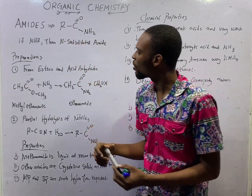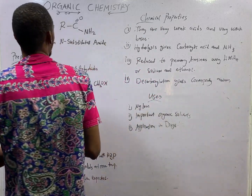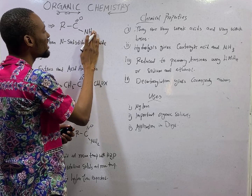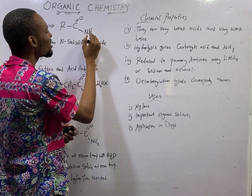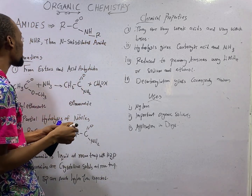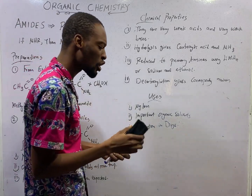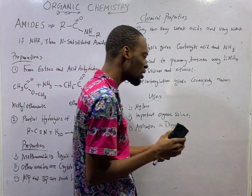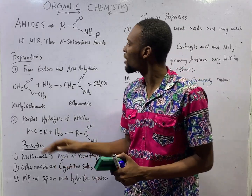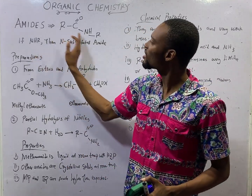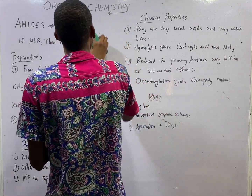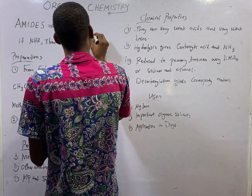When you have NH with another alkyl group instead of H2, we call that N-substituted amides. If you have NH-R (an alkyl group) instead of NH2, that is N-substituted amides.